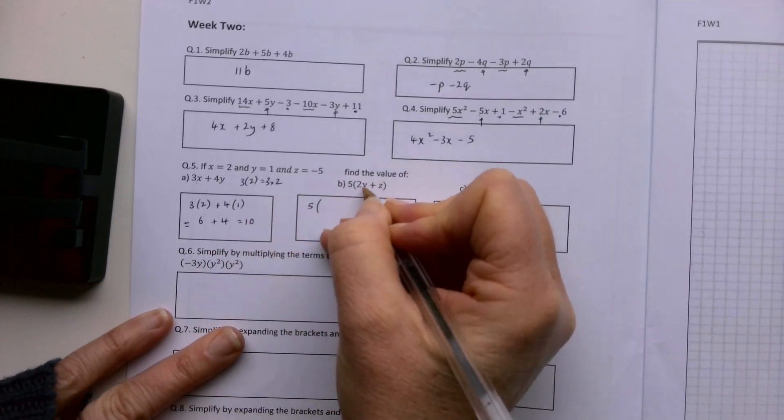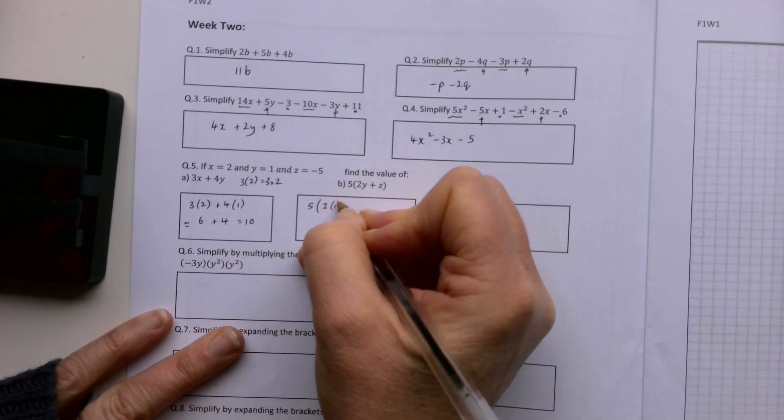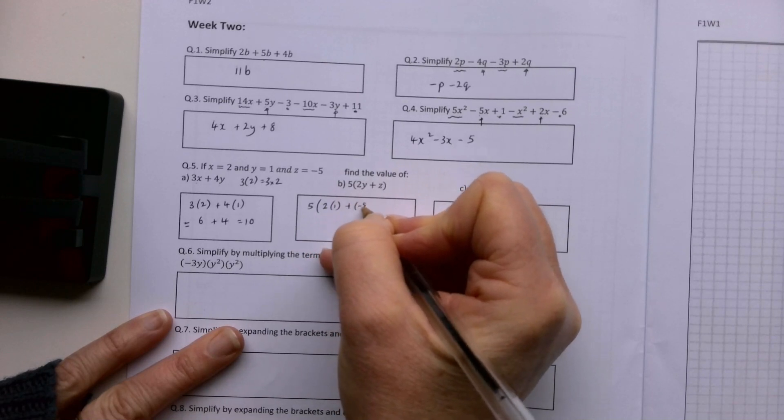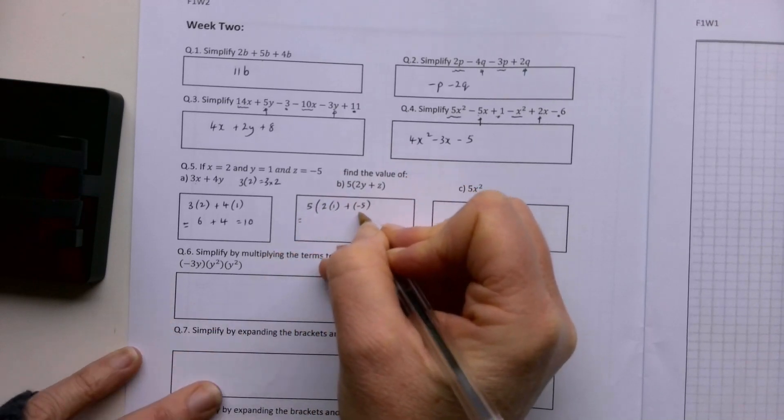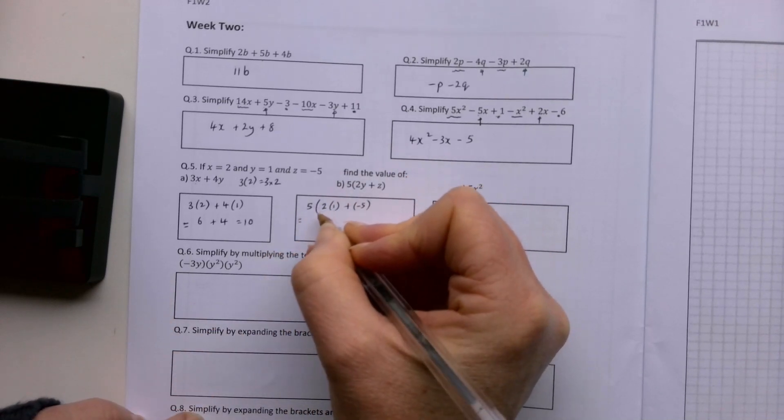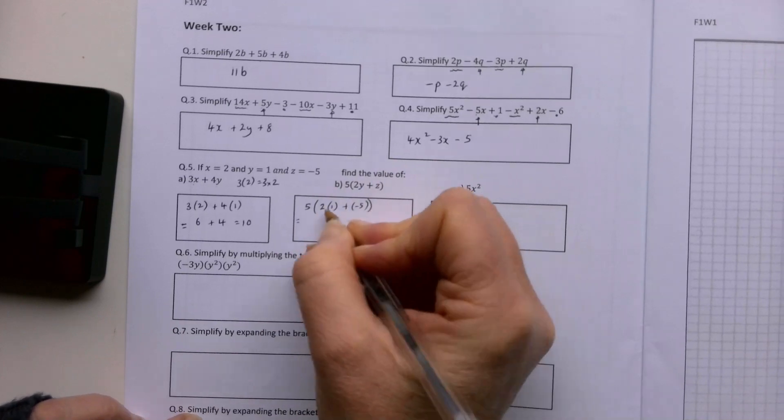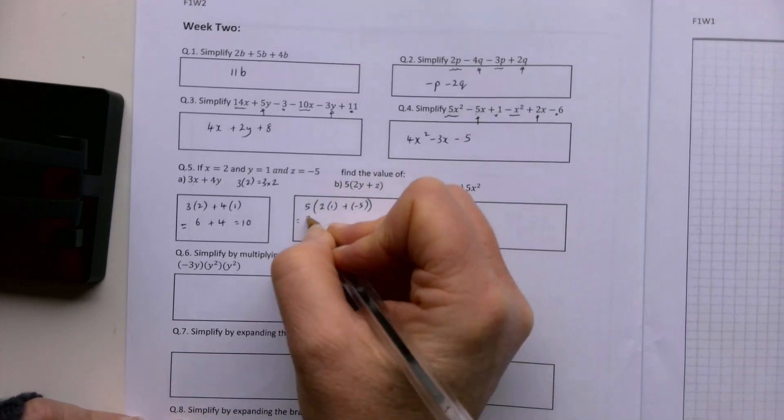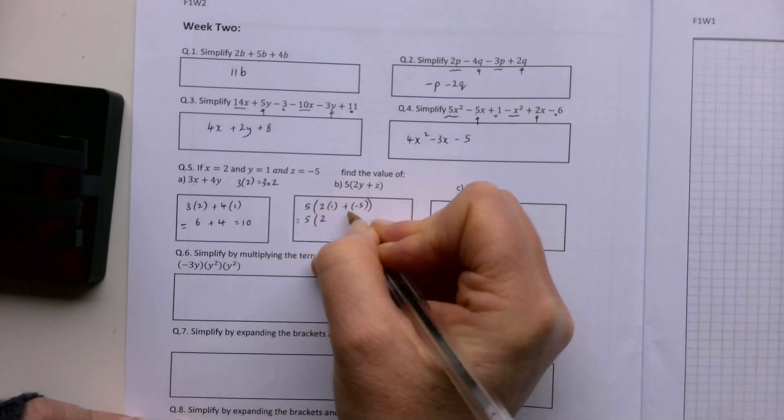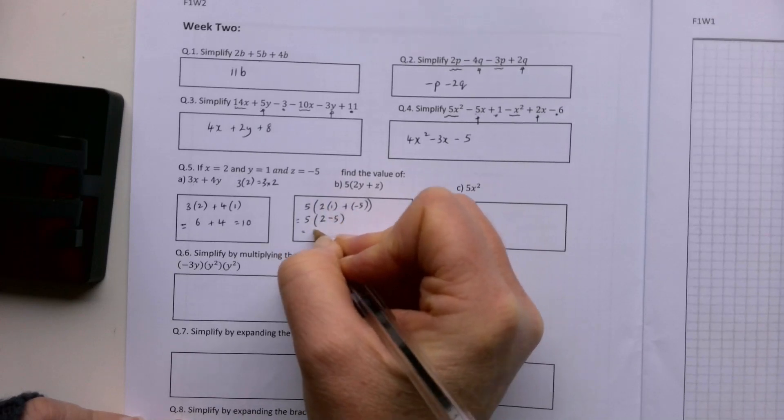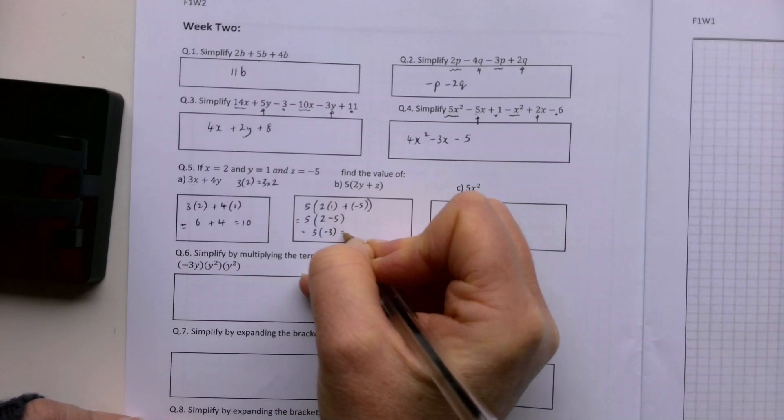5 by 2y plus z, so 2 by 1 plus minus 5. I'm going to do what's in the bracket before I multiply by the 5. So 2 by 1 is 2 minus 5, which is minus 3. Then 5 by minus 3, which is minus 15.